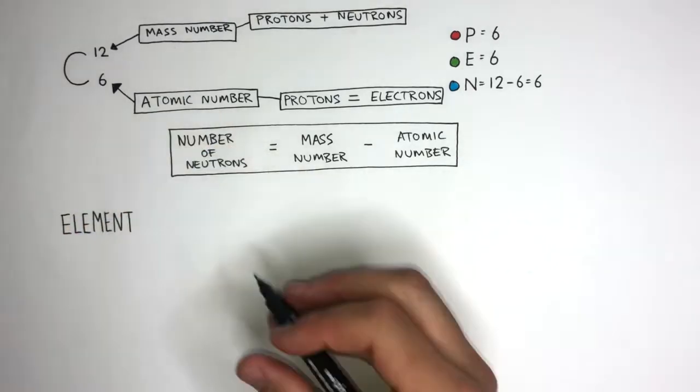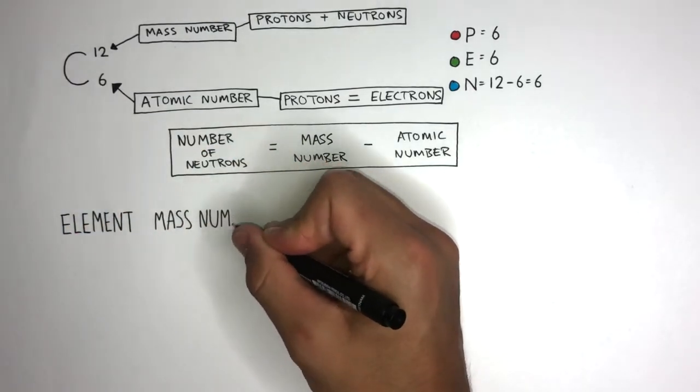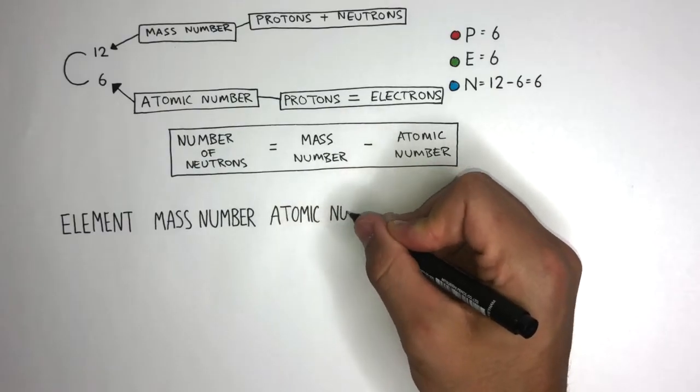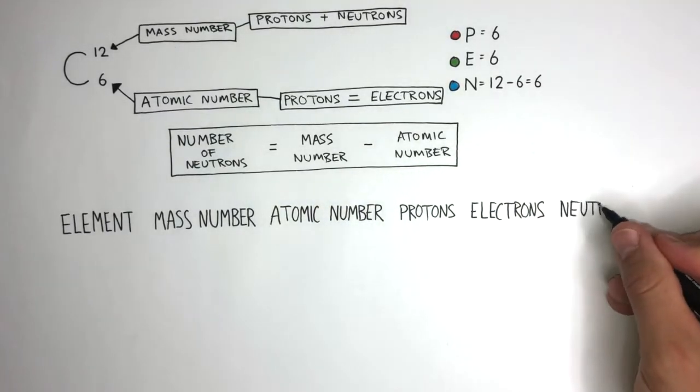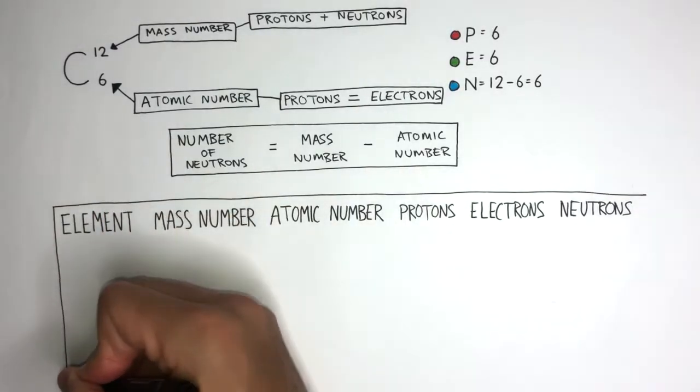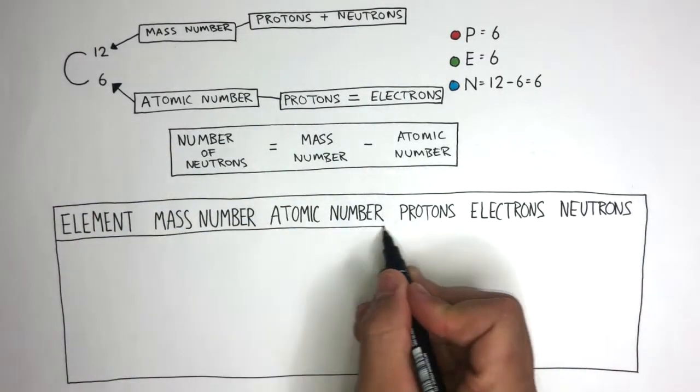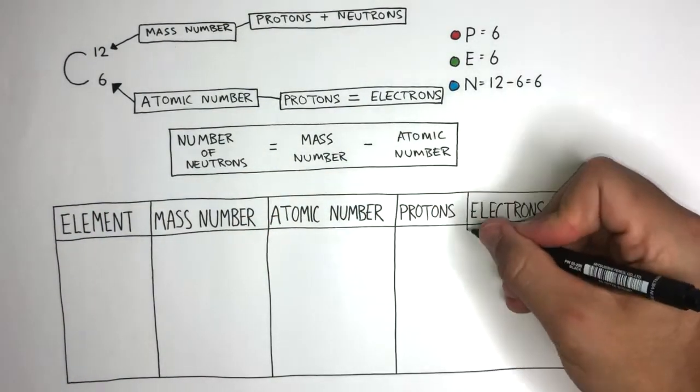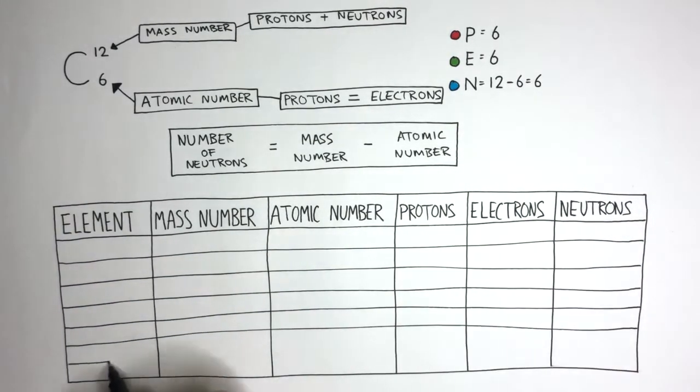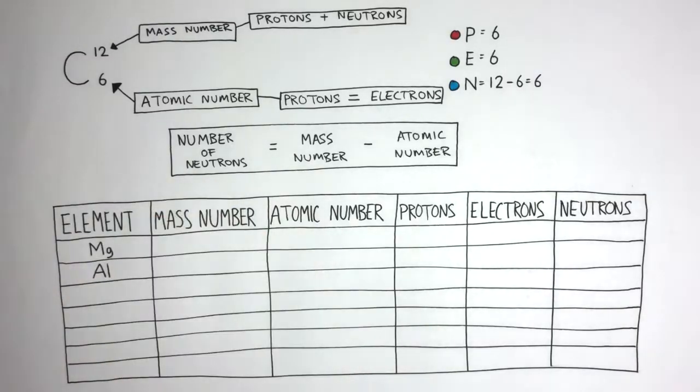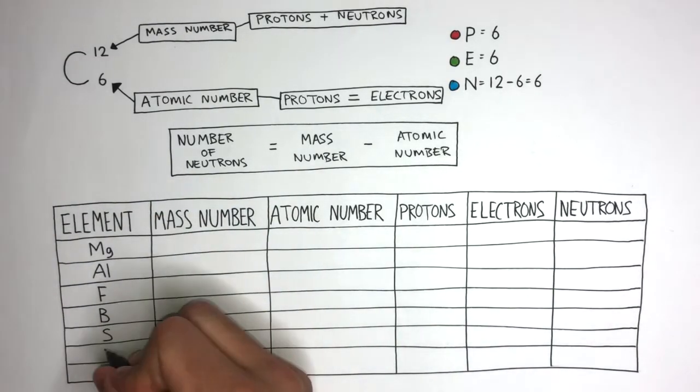To put what you've learned into practice, I'd like you to now find out what the mass number and atomic number is for each element that I've put in the table. Can you then please use this information to figure out how many protons, electrons, and neutrons each element has? If you do struggle, you can just use the P-E-N technique, and this will help you figure out exactly how many subatomic particles each element has.